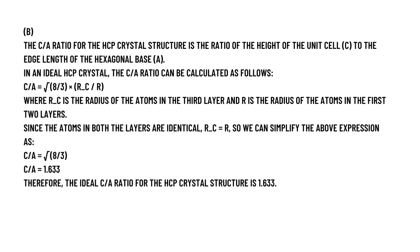The answer for part B: the C/A ratio for the HCP crystal structure is the ratio of the height of the unit cell C to the edge length of the hexagonal base A. In an ideal HCP crystal the C/A ratio can be calculated as follows.